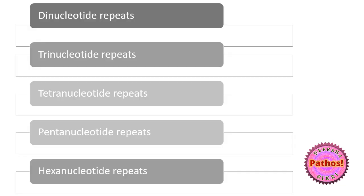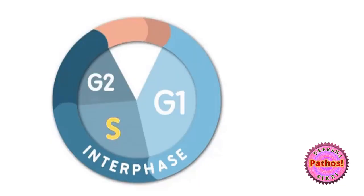From that, we can understand that we could have dinucleotide, trinucleotide — which should put an alarm bell in your head — tetranucleotide repeats, pentanucleotide repeats, and hexanucleotide repeats.